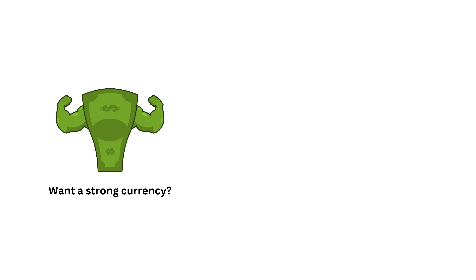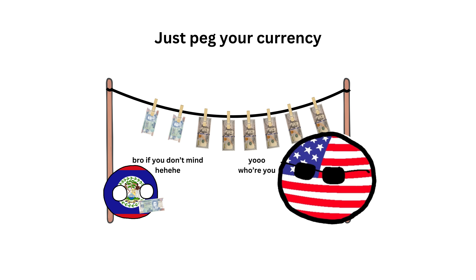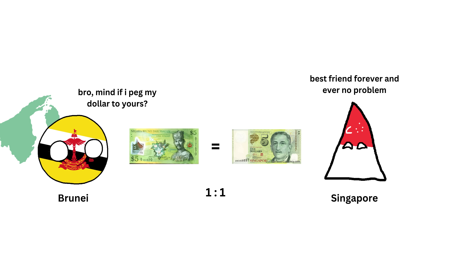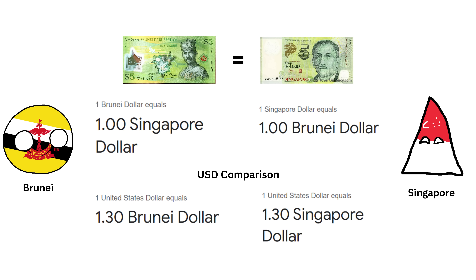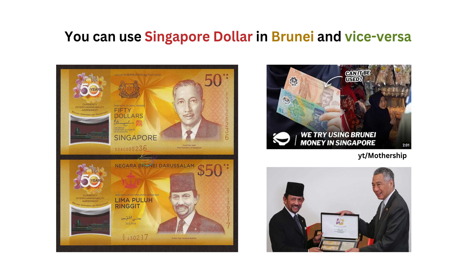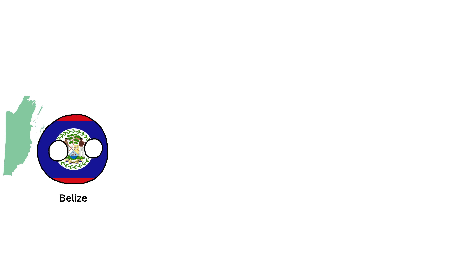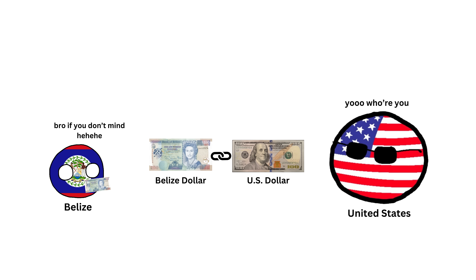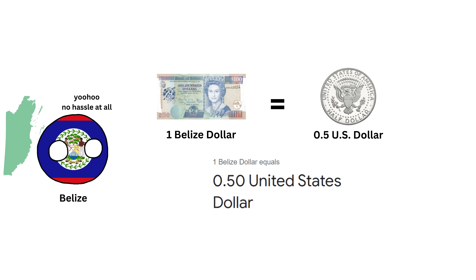Section 5: Fixed Value. So if you want your country to have a stable and strong currency and don't want the hassle, just use this trick — peg your currency to the currency of a stronger and stable country. For example, Brunei, an oil-rich small sultanate in Southeast Asia, pegged their currency one-to-one to the Singapore dollar. So both currencies have exactly the same value, and that's why you can also use the Singapore dollar in Brunei and vice versa. Another example is Belize, a small country next to Mexico, which pegs its currency, the Belize dollar, to the U.S. dollar. They set the rate so that one Belize dollar is always equal to half a U.S. dollar.